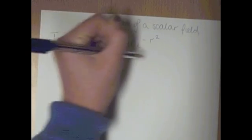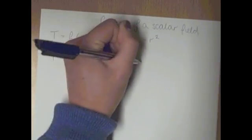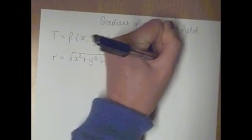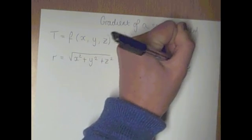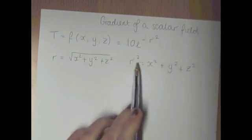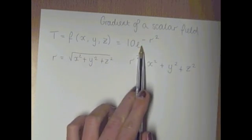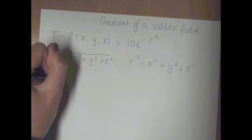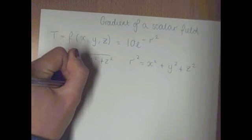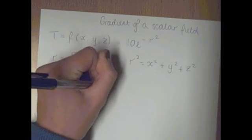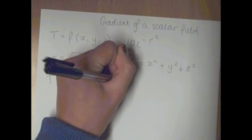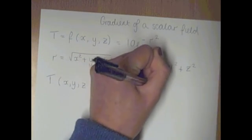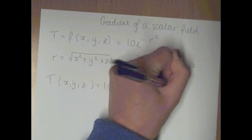So therefore R squared equals x squared plus y squared plus z squared. So if I sub this R squared back into our first equation, we get T of x, y, and z equals 10e to the minus (x squared plus y squared plus z squared).